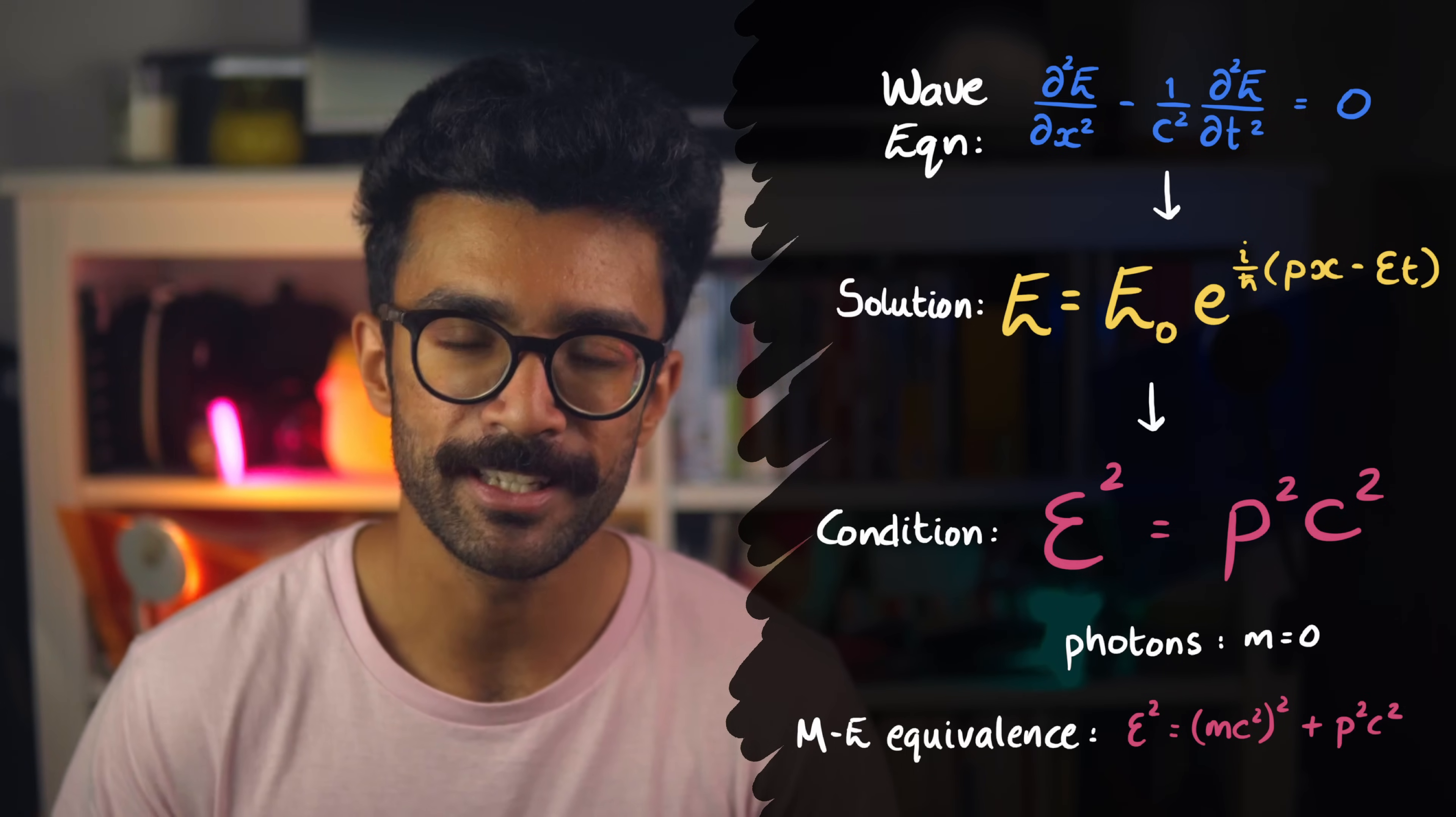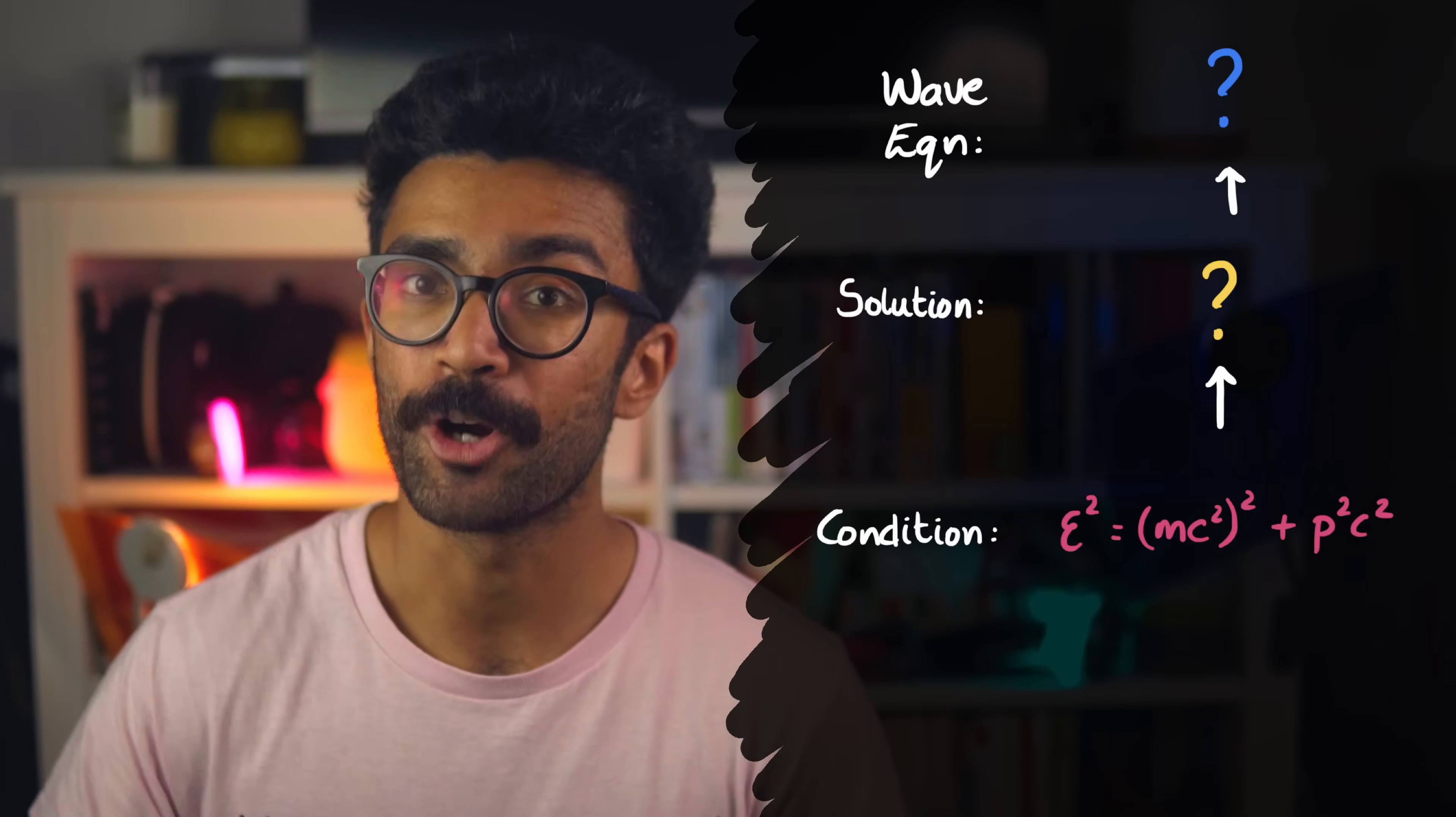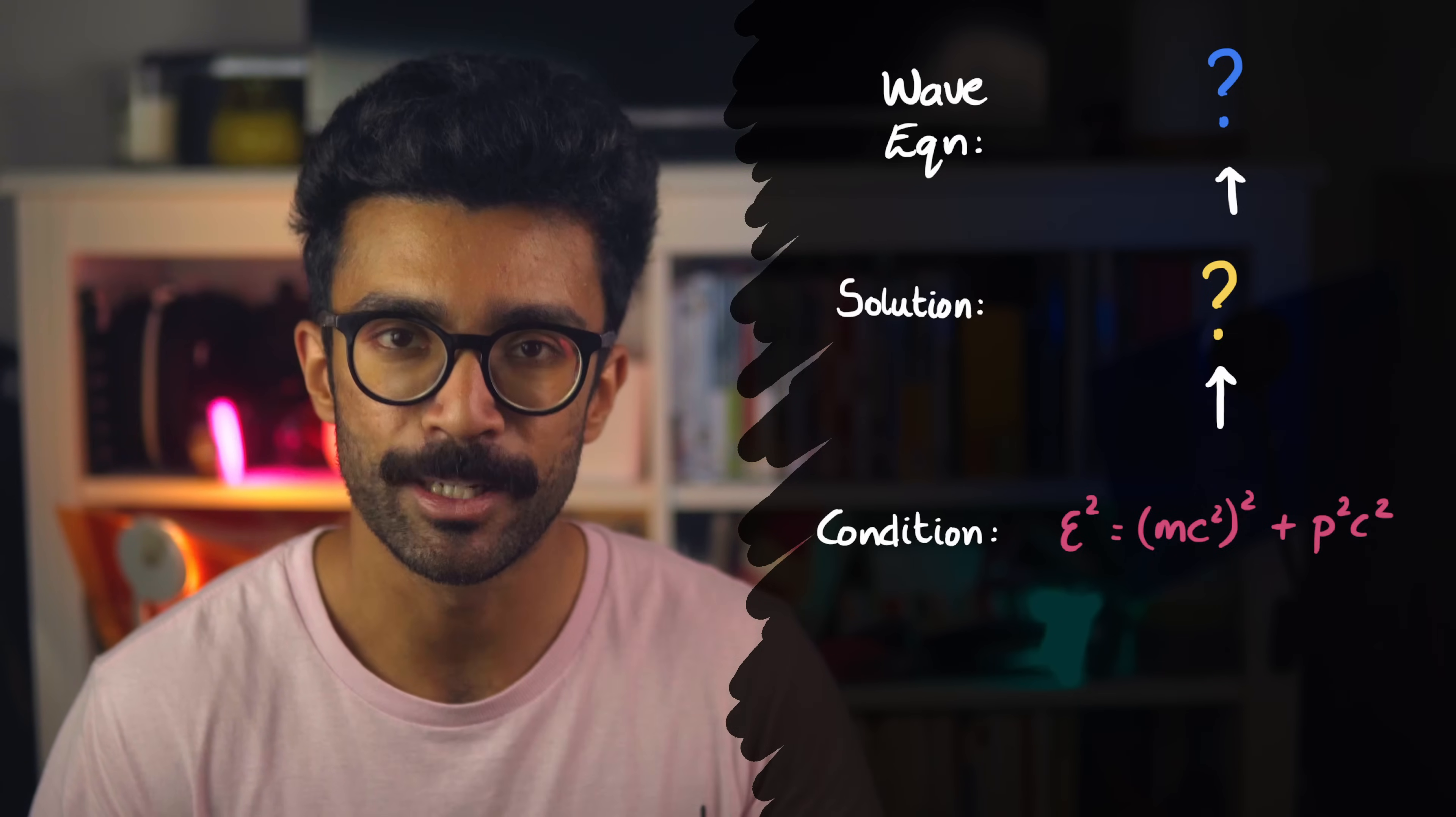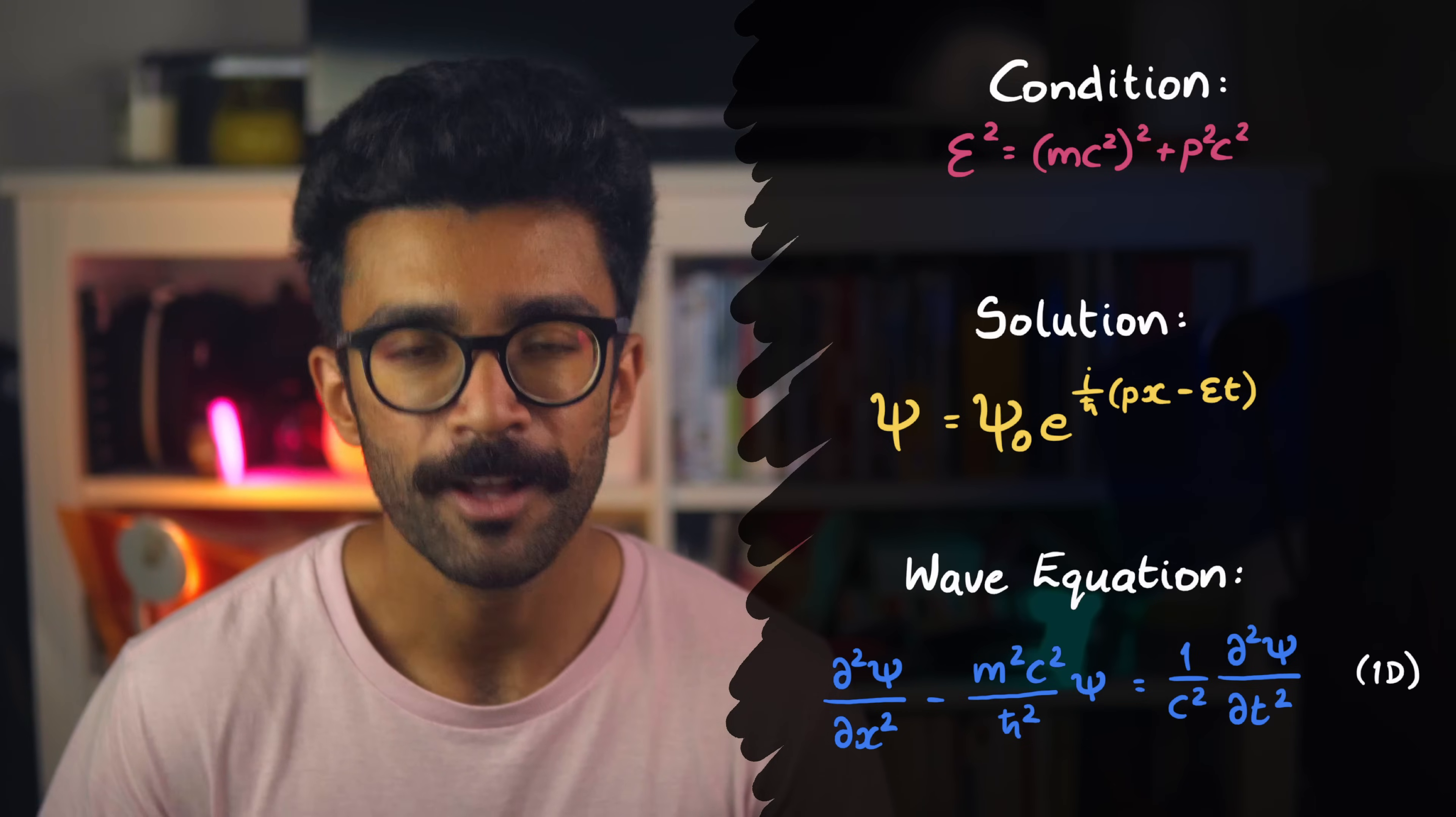So, what if we now choose to go the other way, but with a different relationship? What if we now insisted that the relationship that must hold must be the one for any object that has mass, and possibly some momentum as well? In other words, we're insisting that the relationship that must hold true must be the full mass-energy equivalence relation. What would our wave equation have to look like if it were to describe objects with mass rather than electromagnetic waves?